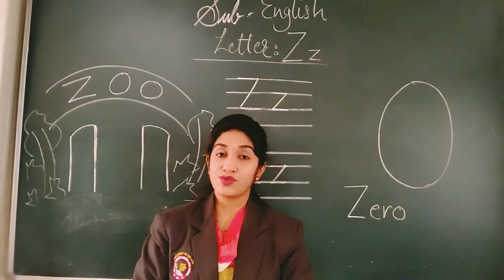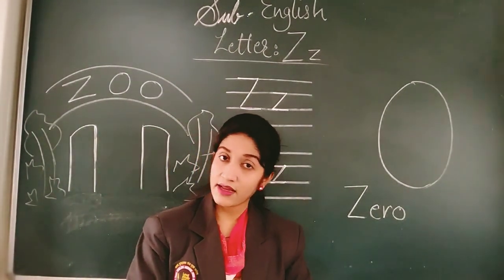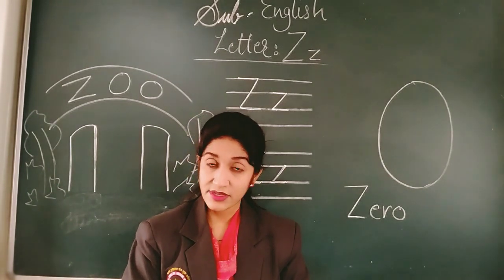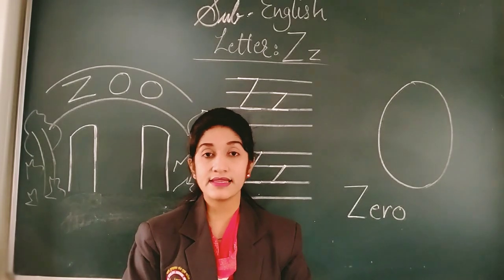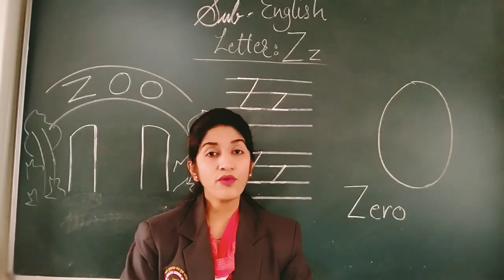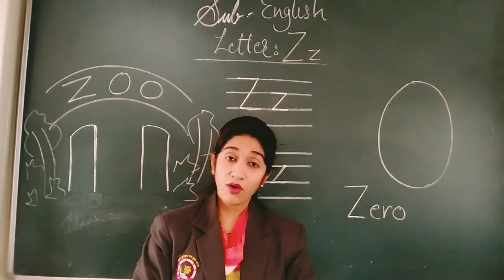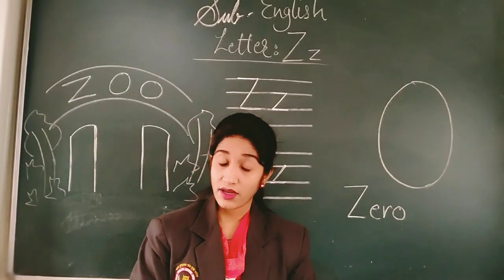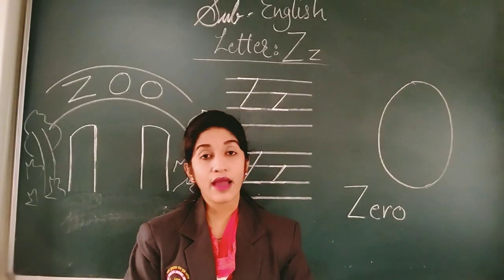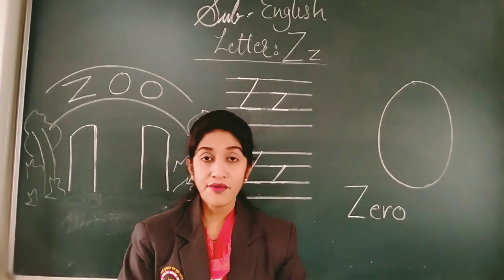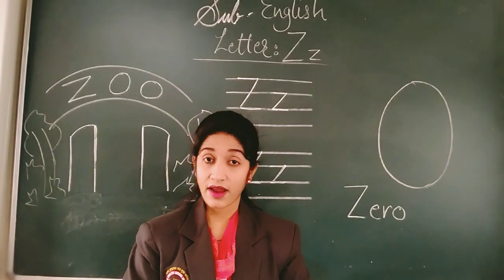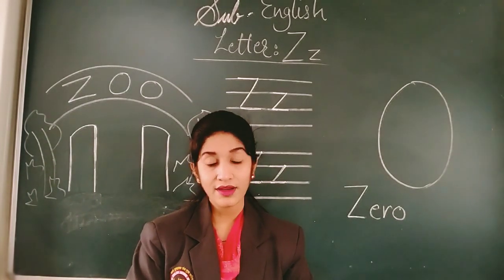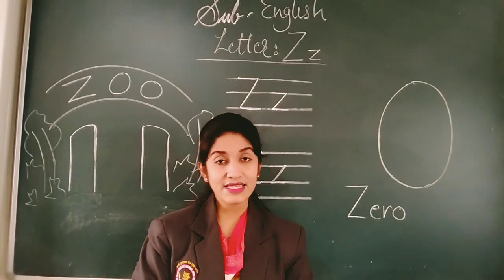So hi dear children, have you understood how to write alphabet Z — capital Z and small Z? Your home book for today: you have to write one page of capital Z and small Z in your English notebook, that is your four line notebook. Bye bye, stay safe.